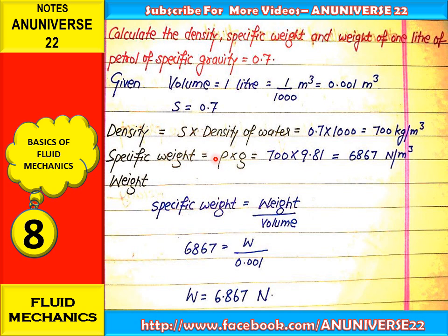Now, the specific weight, small w, equals rho times g. Rho is the density we calculated, that is 700, and g, the acceleration due to gravity, is constant at 9.81. So the product of 700 into 9.81 equals 6867 newton per meter cube.